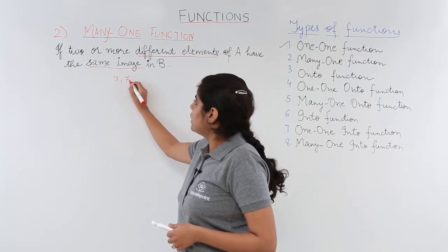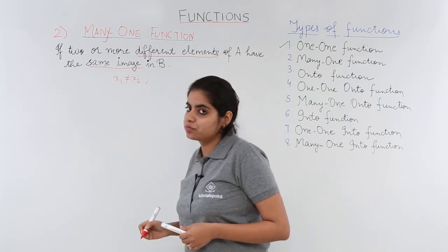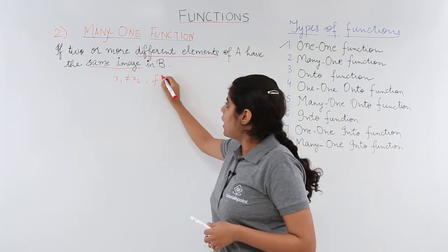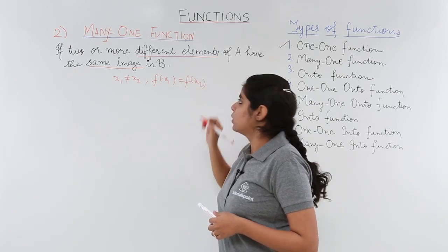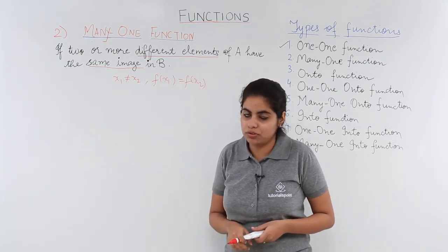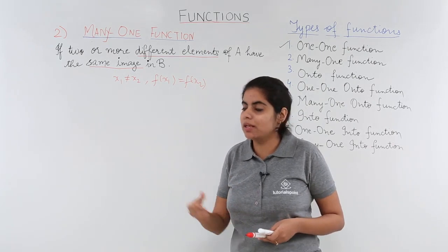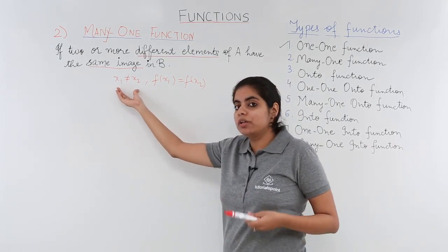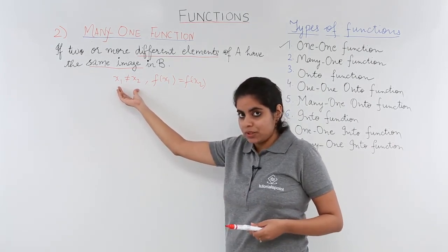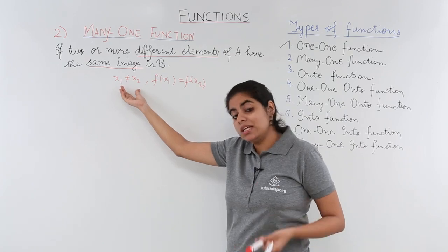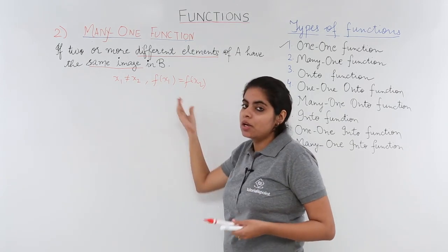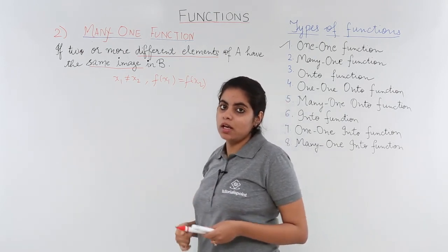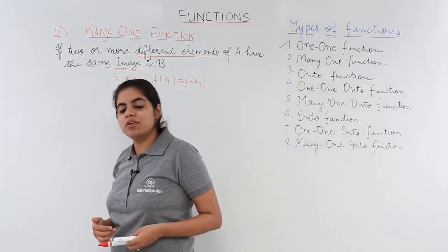It can also be mathematically written as: if x1 not equal to x2, but f(x1) equals f(x2), then it is a many-one function. If x1 and x2 are two different elements of a set and they aren't equal, but their images are equal, we obtain a many-one function.